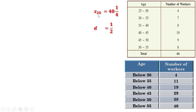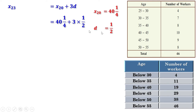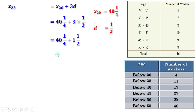The 23rd term is the 20th term plus 3 times the common difference. The 20th term is 41 by 4 and common difference is 1 by 2. So this can be written as 41 by 4 plus 3 into 1 by 2. 3 into 1 by 2 is 3 by 2 or 1 and a half. So this becomes 41 by 4 plus 1 and a half. 40 plus 1 is 41, and 1 by 4 plus 1 by 2 is 3 by 4. So the 23rd term is 41 and 3 by 4.